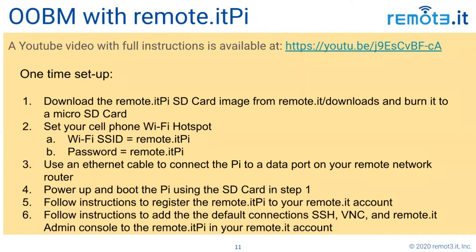You need to download that image off our website and burn it on an SD card. You will have to set up your phone Wi-Fi hotspot with the correct Wi-Fi SSID and password, because the Pi is going to boot and look for that SSID and use that password to join it. It works for Android or iOS — I've tried both.